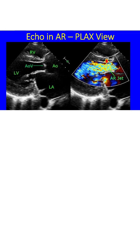A portion of the thickened aortic wall can be seen between the aorta and left ventricle. The AR jet is almost filling the left ventricular outflow tract and extends well into the left ventricle beyond the anterior mitral leaflet, indicating a free aortic regurgitation.